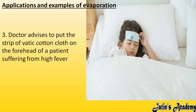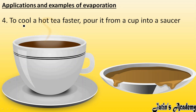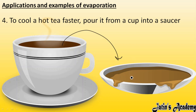The fourth application: to cool hot tea faster, pour it from a cup into a saucer. If tea in a cup is too hot to drink, pour it into a saucer. As we know, by increasing the surface area, evaporation rate also increases. By increasing the surface area, the heat present inside the tea evaporates more quickly, and so the tea gets cool faster.